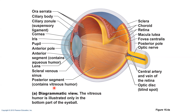The pigmented layer absorbs light, prevents its scattering, and stores vitamin A. The neural layer has lots of nerve cells and photoreceptors — photoreceptors transduce light energy. Looking at this larger picture, from the pigmented layer all the way to the inner surface is the sensory layer. We have different cell types here: bipolar cells, ganglion cells, amacrine cells, and horizontal cells.